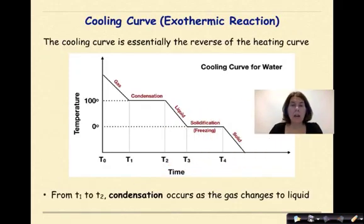Cooling curves are exothermic reactions. The cooling curve is essentially the reverse of a heating curve. From T1 to T2, which we see right here, condensation occurs as the gas changes to a liquid.